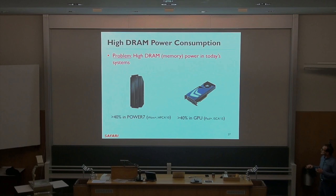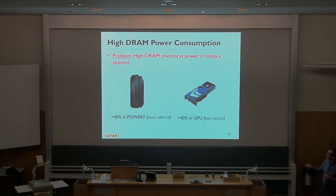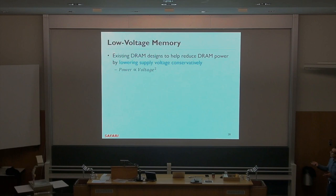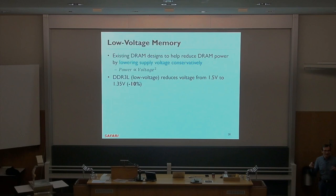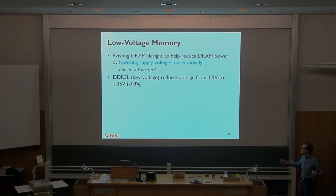DRAM is already consuming a lot of power and will consume even more, especially as we want more DRAM in systems. One way of reducing DRAM power is lowering supply voltage — very powerful because power is correlated quadratically with supply voltage: P = α·C·V²·f. Existing systems do this conservatively; for example, DDR3L reduces voltage from 1.5V to 1.35V — about 10%, which is not bad, but is it the maximum? LPDDR is lower power inherently, but there's margin there as well.